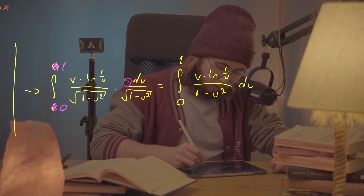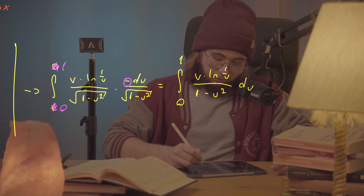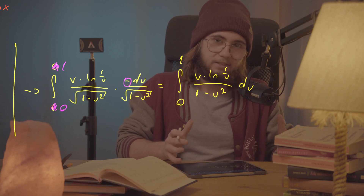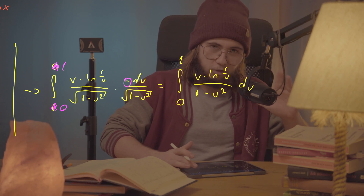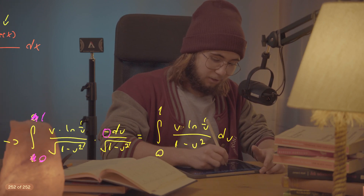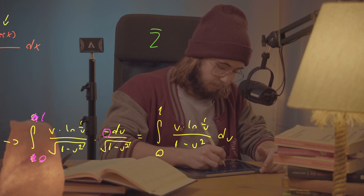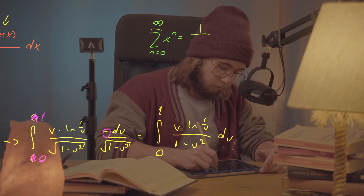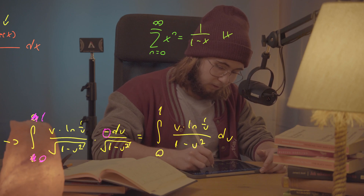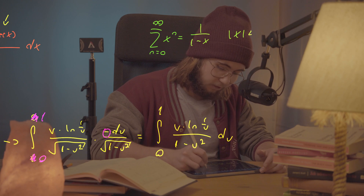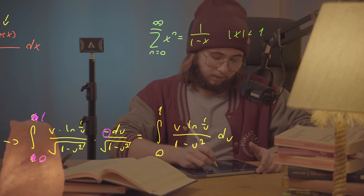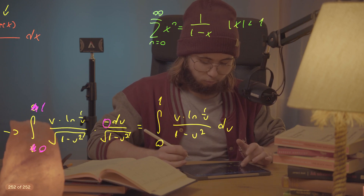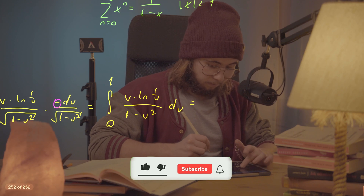Now I'd like to invoke the power series, because the 1/(1 − u²) factor looks like a geometric series. From calculus, the sum as n goes from 0 to ∞ of xⁿ equals 1/(1 − x) whenever |x| < 1, which holds here since we're integrating over [0, 1], so there are no convergence issues.